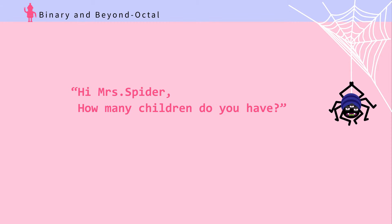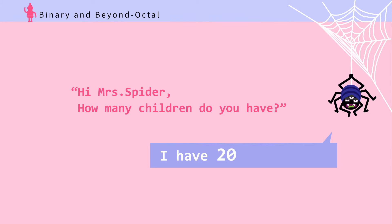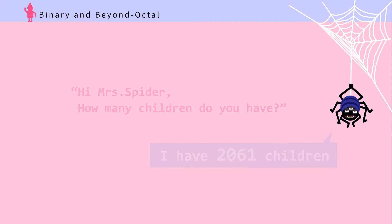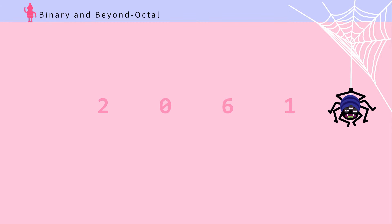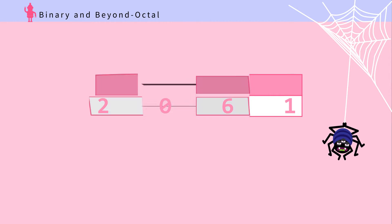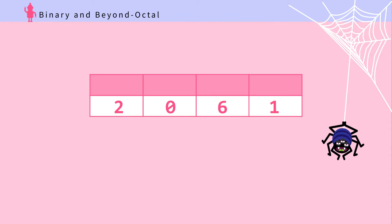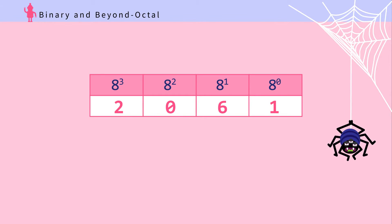Hi Mrs. Spider, how many children do you have? "I have 2061 children." How many is that? Mrs. Spider can count using numbers zero to seven. Let's see what 2061 is in base ten, or decimals. First, lay out the octal number 2061.